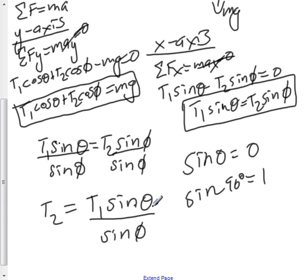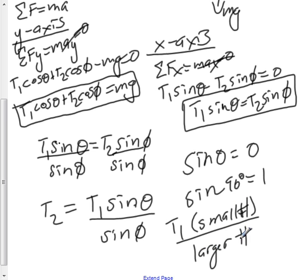If we take the sine of a smaller angle, it's going to give us a smaller value. And if we take the sine of a larger value than that, it's going to give us a larger value than this one. So here we're going to have T1 times some small number divided by a larger number. This here is going to result in an overall smaller value for T2.